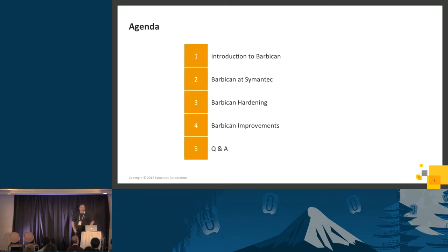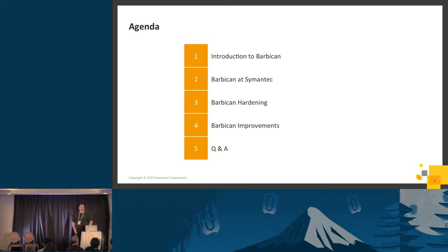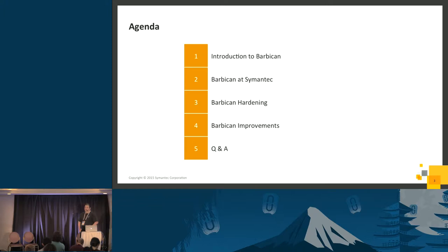This is the agenda I've put together. For those in the audience who may not be familiar with Barbican, I'm going to give a quick five to ten minute introduction. After that, I'll discuss what problems we have at Symantec and how we're using Barbican to resolve those problems. I'll talk about what we've done to improve the out-of-the-box configuration, cover improvements Symantec is working on, and then we'll have about ten minutes for Q&A.